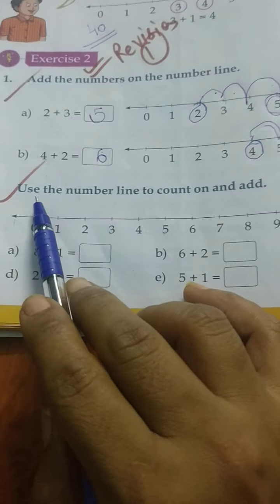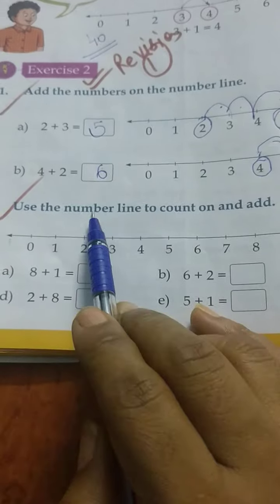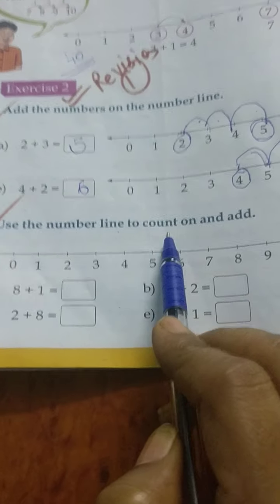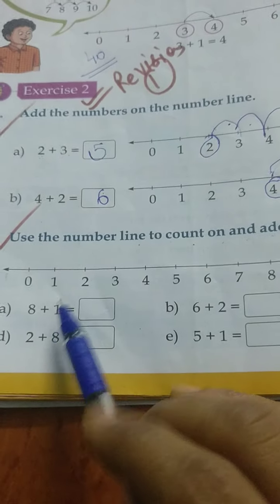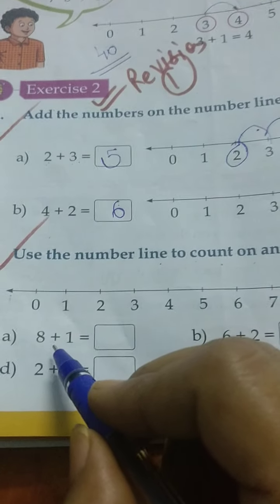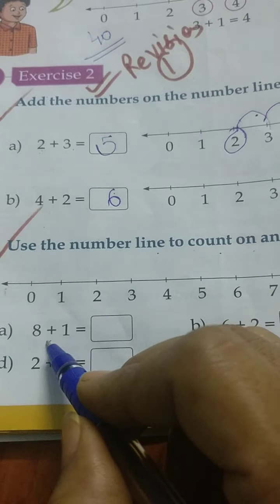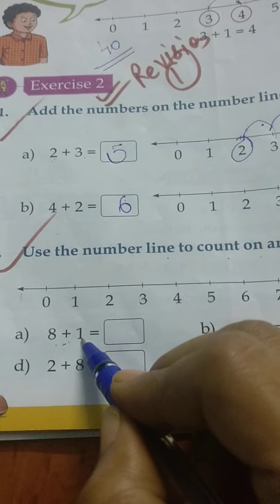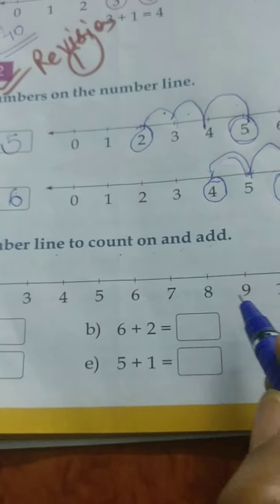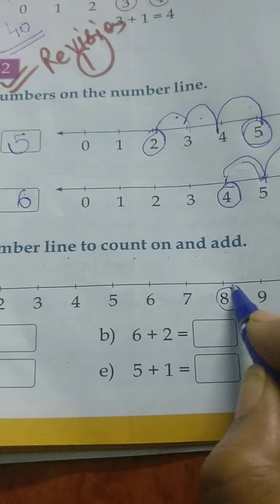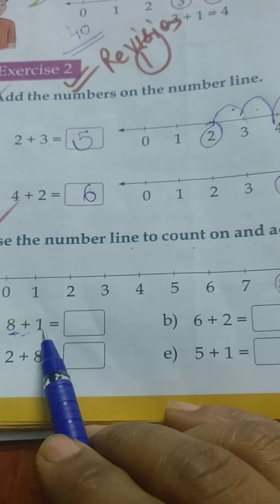You want to do the second question also. Use the number line to count on and add. You have to do all of these. Let me explain one example first. Look, 8 plus 1. What number is given here? 8. So where is 8 on this number line? Here. And what did they say? Jump 1.